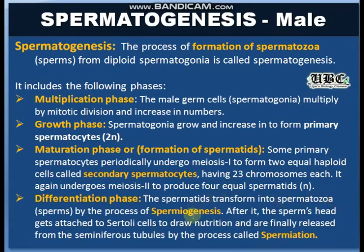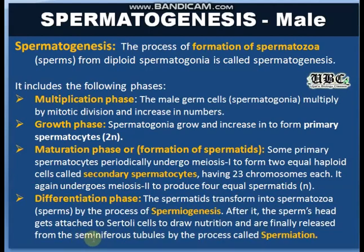In spermiogenesis, the sperm cell attaches to the Sertoli cells to draw nutrition and transforms into spermatozoa. These spermatozoa are then released from the seminiferous tubules via the rete testis and vasa efferentia — a process called spermiation. To summarize the key terms: spermatogenesis is the entire process of sperm formation; spermiogenesis is the transformation of spermatids into mature spermatozoa; and spermiation is the release of spermatozoa from the seminiferous tubules.